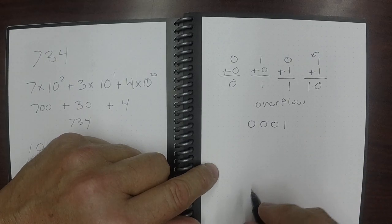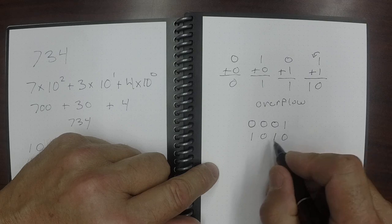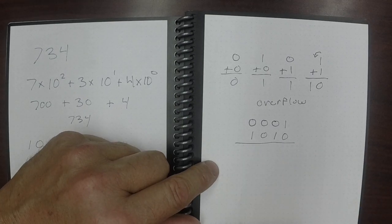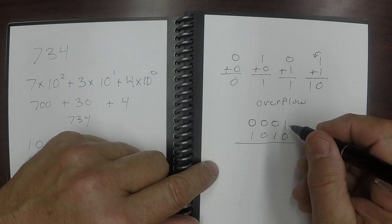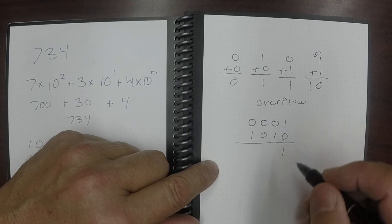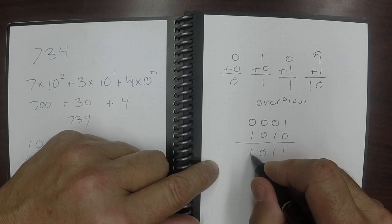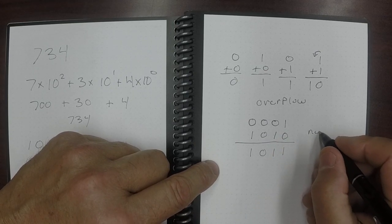So we're going to do 0, 0, 1 and we're going to add it to 1, 0, 1, 0. All right, this is 1 plus 0 is 1, 1 plus 0 is 1, 0, and 1. This is not overflow.